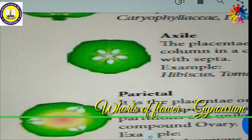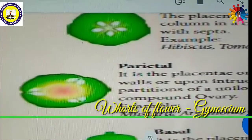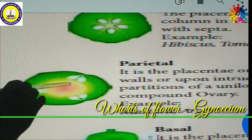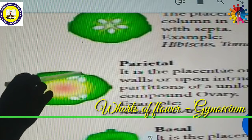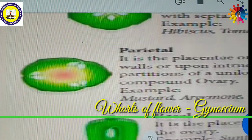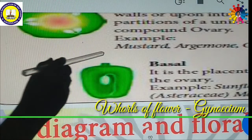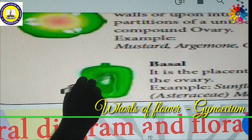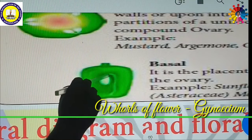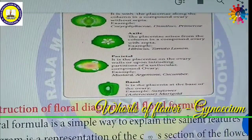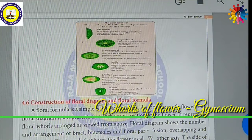In parietal placentation, the ovules are attached at the peripheral wall of the ovary. Cucurbit is a very good example. In basal placentation, the stalk of the ovule is called the funicle, and the ovule is attached at the base of the ovary. Based on the attachment of ovules within the ovary, these are classified into six different types.